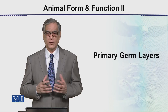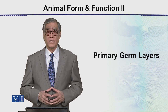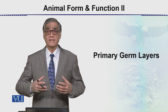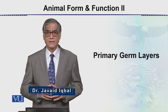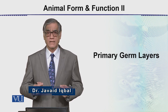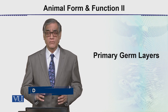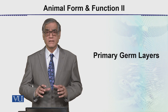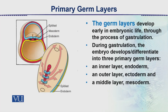In this module, we will be discussing the primary germ layers, which are the result of gastrulation. When it comes to gastrulation, it results in three layers: the ectoderm, mesoderm, and endoderm. In this module, we will be discussing only the ectoderm, which is one of the primary germ layers that develops early in embryonic life through the process of gastrulation.